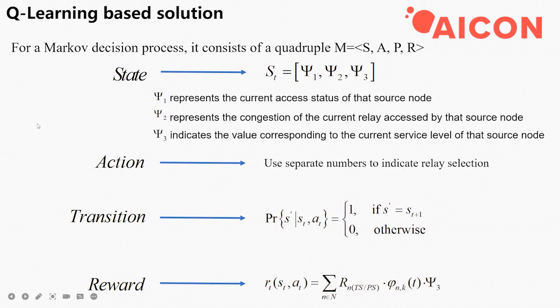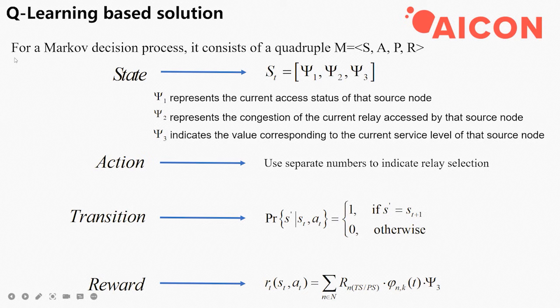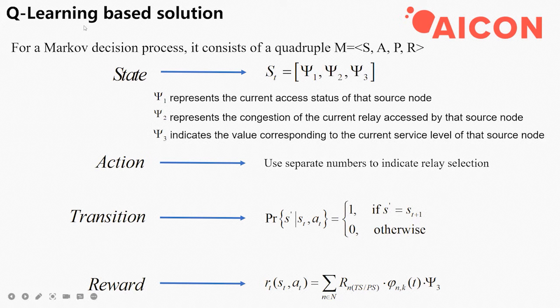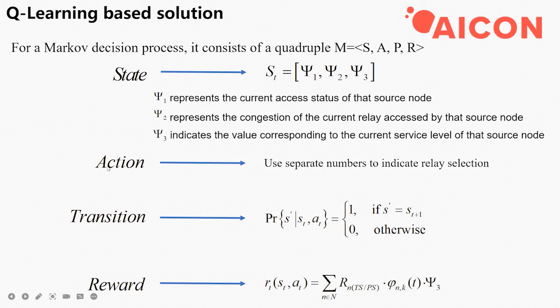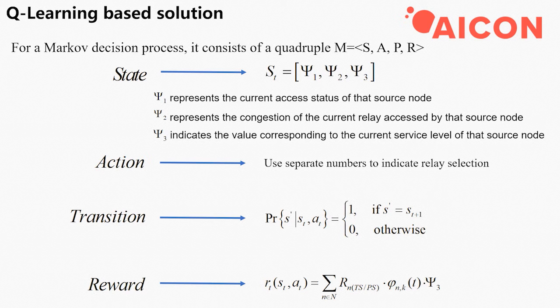And what about the Q-learning based solution? For Markov decision process, it consists of a quadruple M: state, action, transition, and reward.